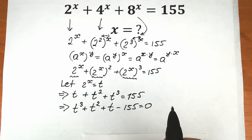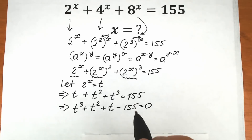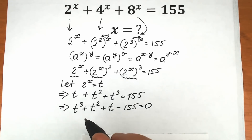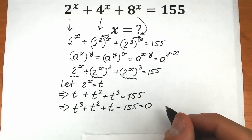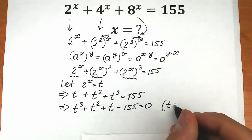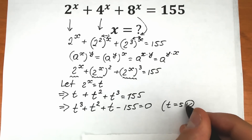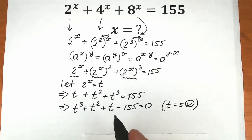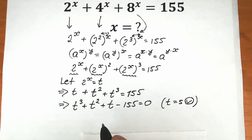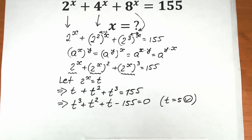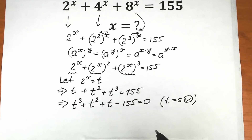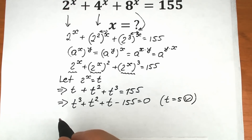How can we solve this cubic equation? There are many approaches, and different students solve it in their own way. My approach: I can see that t equals 5 is a solution, because if you plug in 5 it gives a correct equation. If you know t equals 5 is a solution, you can rewrite the expression and factor out t minus 5.